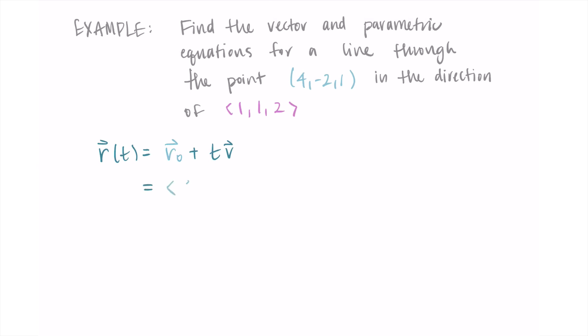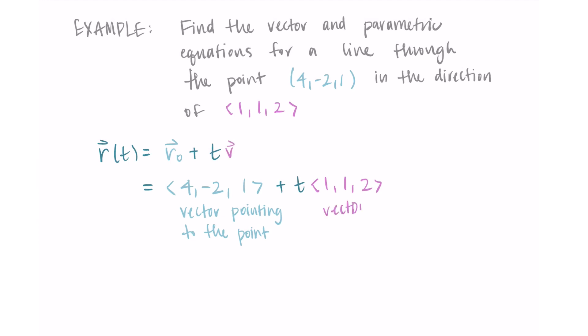Our r₀ is the vector (4, -2, 1) — a vector I've created that points at the given point. Then I add t, my parameter, multiplied by the direction vector I was given, which is (1, 1, 2).